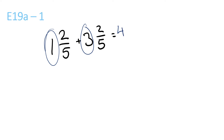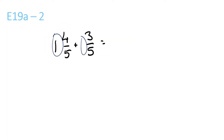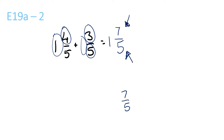1 plus 3 is 4. 2 plus 2 is 4. And the 5 stays the same. 1 plus nothing is 1. 4 plus 3 is 7. 5 stays the same. 7 over 5 — since the top one is larger than the bottom one, we have to convert this. It is equal to 1 and 2 over 5, because 5 goes into 7 once with a remainder of 2 over 5. So now you have 1 and 2 over 5.